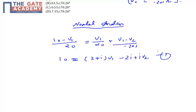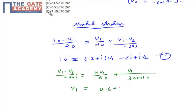Now let's apply the node at node v2. Sum of incoming current equals sum of outgoing current. v1 minus v2 by minus 20j equals 4v1 by 20 plus v1 by 30 plus j10. By solving this equation I can get v1 equals 0.6 plus 0.8j upon j minus 4 times v2. This is equation 2.